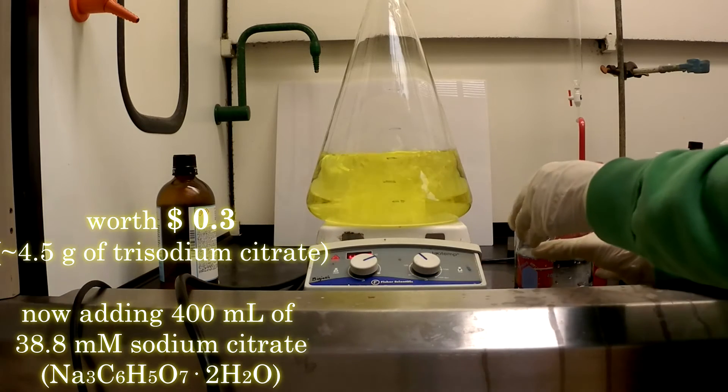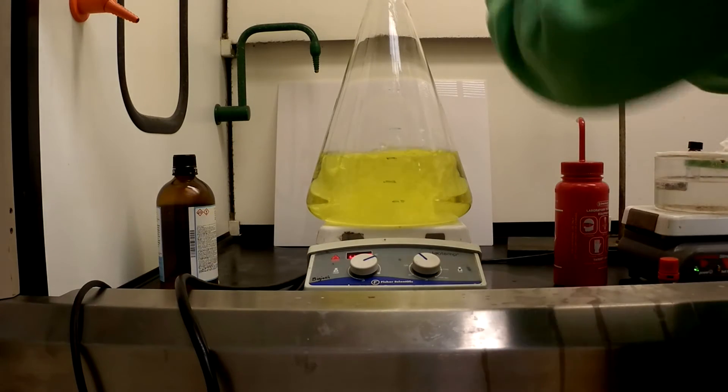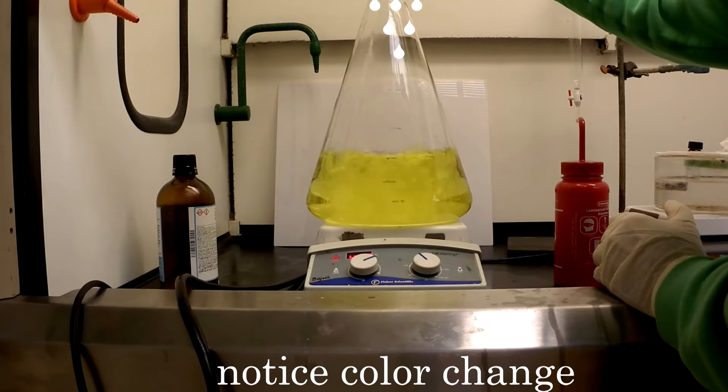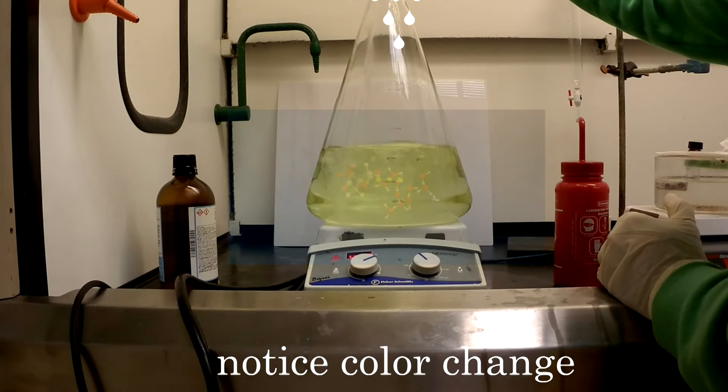As we add the reducing solution, prepared by mixing lime and salt, lime juice, and baking soda, the yellow boiling solution becomes colorless.